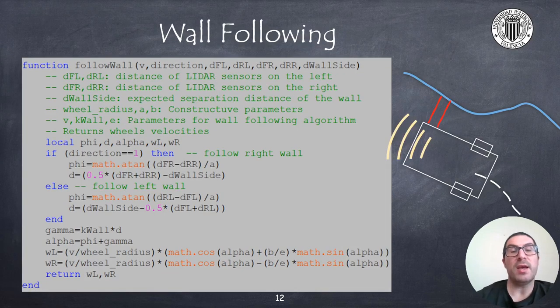Here we have the follow wall routine, which allows you to implement the wall following control to make the robot actually avoid the obstacle. Again, this function was already explained in the previous video. Basically, it needs some parameters to perform the proper control in order to do the wall following.